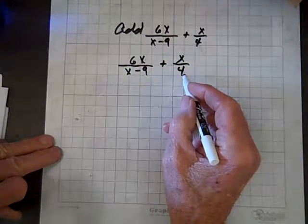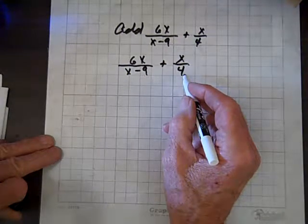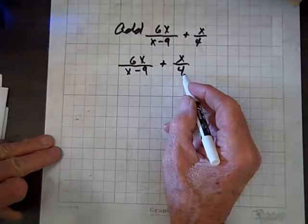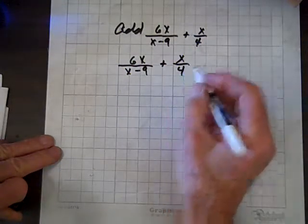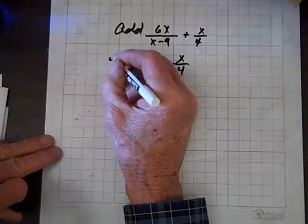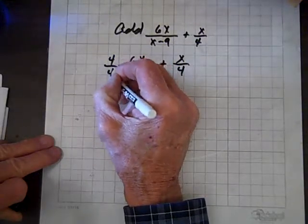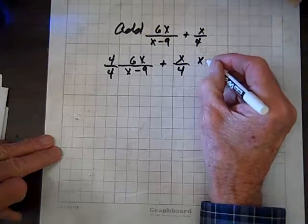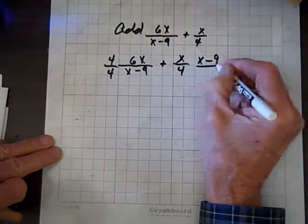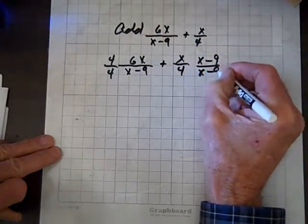x minus 9 and 4 have no common factors, so they're relatively prime. We'll multiply by 1 in the form of 4 over 4 on this side, and for this guy, we'll multiply by 1 in the form of x minus 9 over x minus 9.